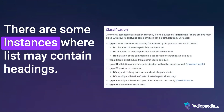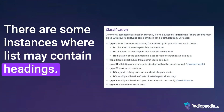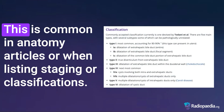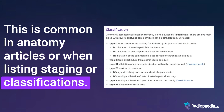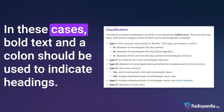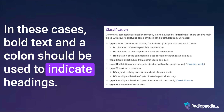There are some instances where lists may contain headings. This is common in anatomy articles or when listing staging or classifications. In these cases, bold text and a colon should be used to indicate headings.